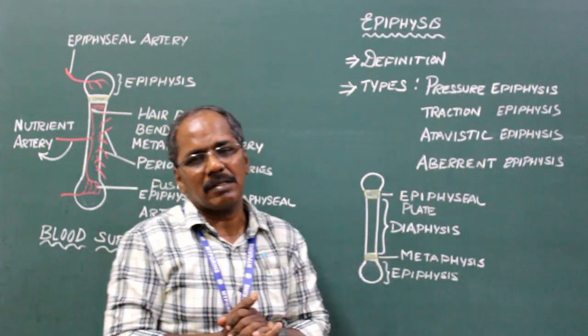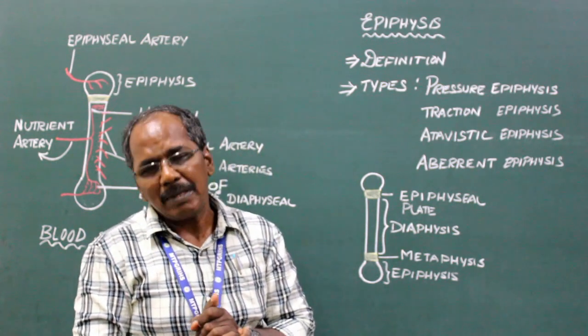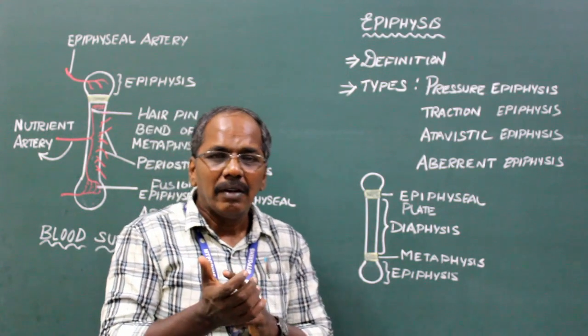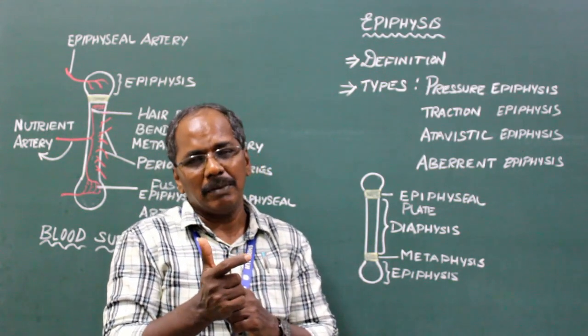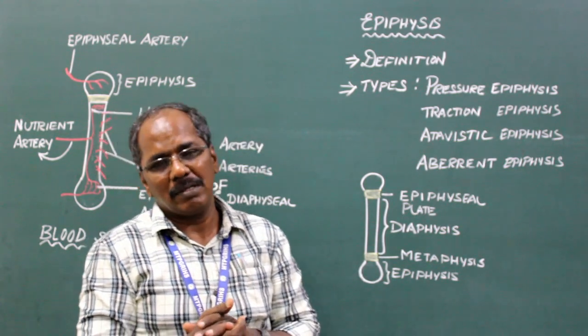Aberrant Epiphysis. It is not always present. Example: head of first metacarpal bone and base of other metacarpal bones.